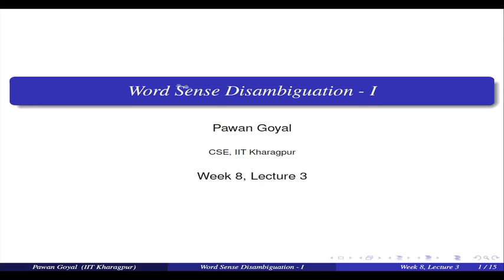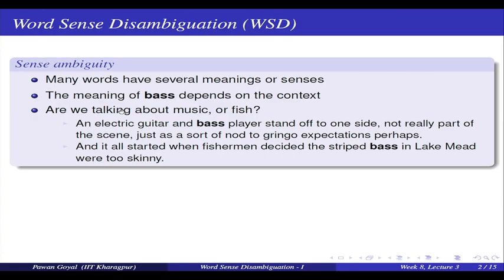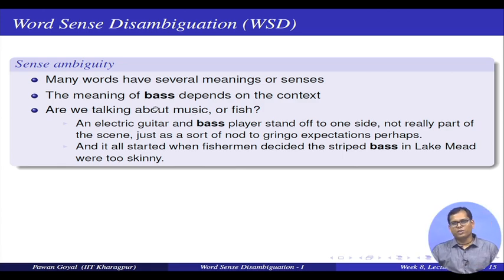Our topic is word sense disambiguation. Let me define the problem again. We have seen this week that there are many words having several meanings — we can call them different senses of the same word. An example is the word 'bass'. You can use bass depending on whether you want to use it in the context of fish or music. The problem is: whenever you are given this word, are we talking about music or fish?